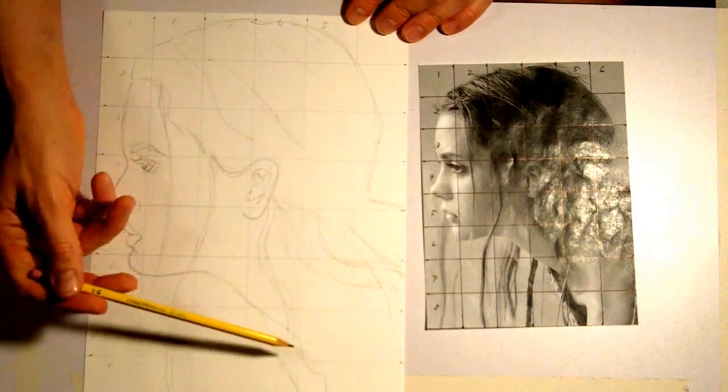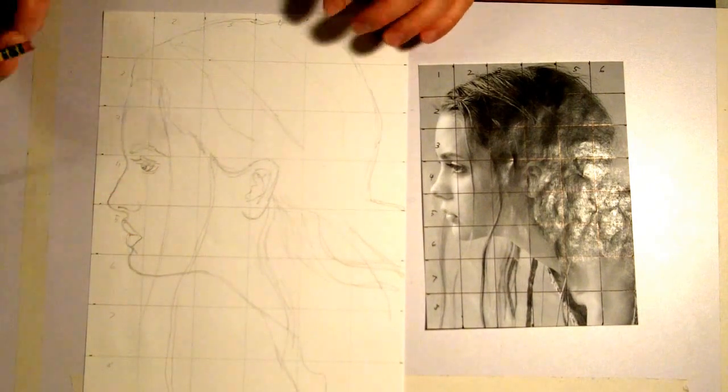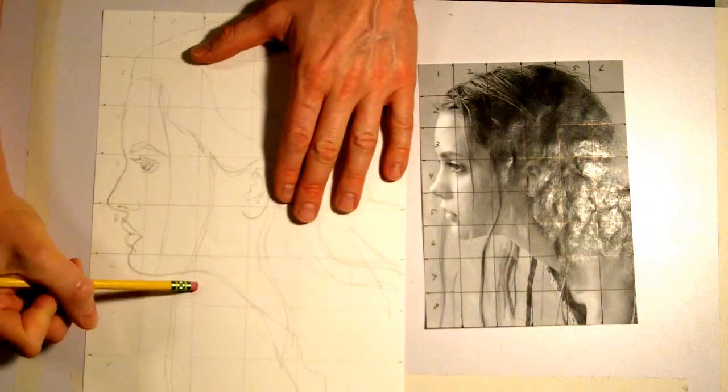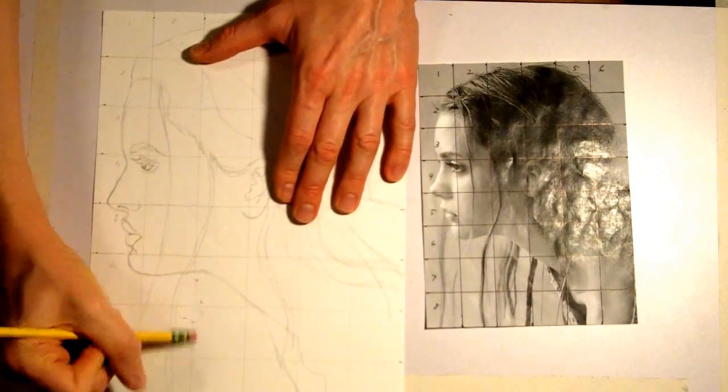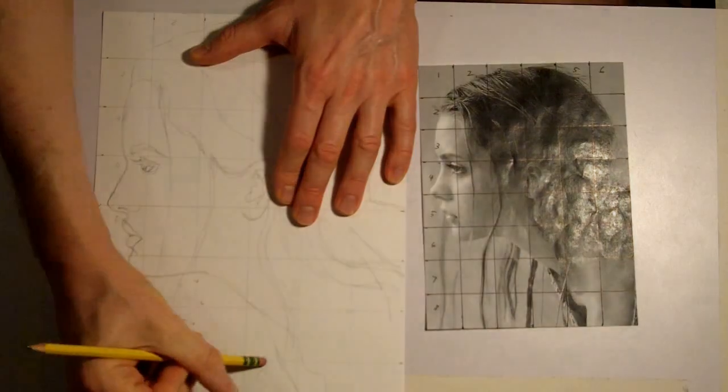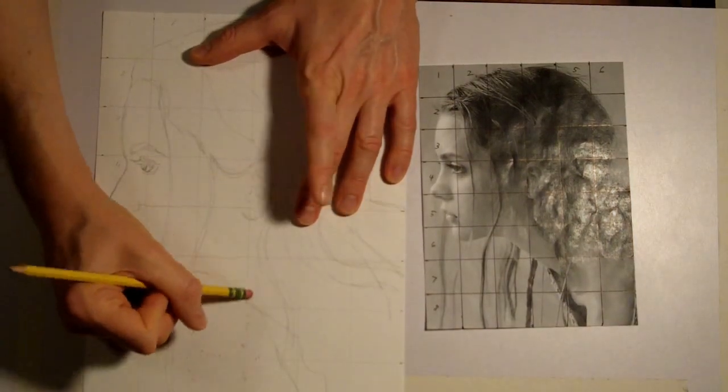So the next step after you have your outline drawing is to go in with your eraser and you're going to very carefully and gently erase all your grid lines.